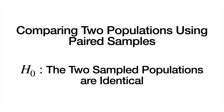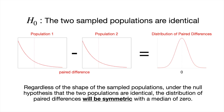We transform the problem from one involving two populations down to a single population by taking the paired differences, and that is what we're going to do here as well — using both the sign test and the Wilcoxon signed rank test to nonparametrically compare two populations. Under the conditions of the null hypothesis — which states that the two populations are identical — when we take the paired differences, the resulting distribution of paired differences is going to be symmetric. This is a very useful result, because it allows us to use the Wilcoxon signed rank test in any situation where we're analyzing paired samples.